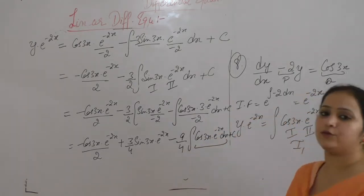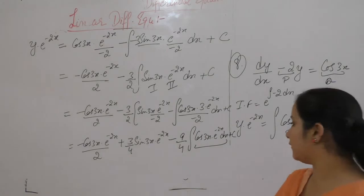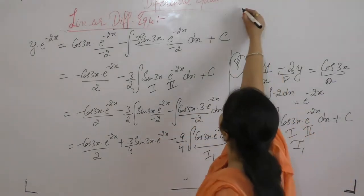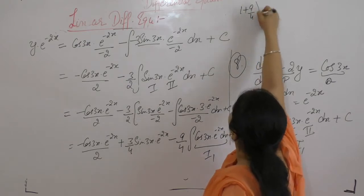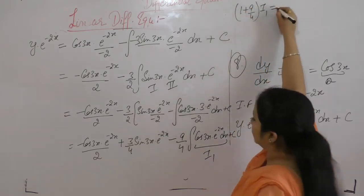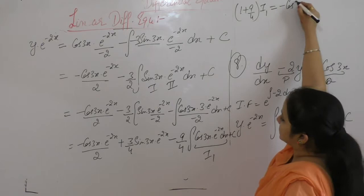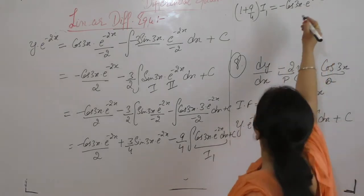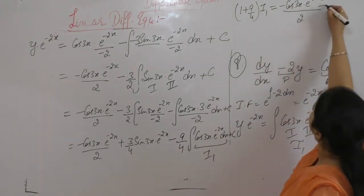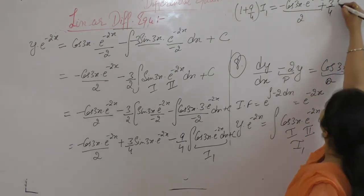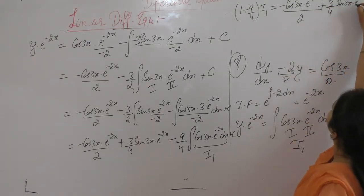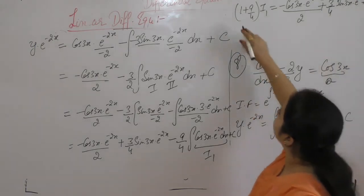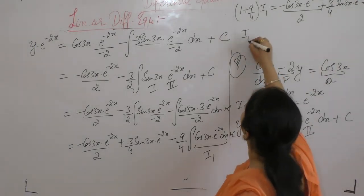This is the same integral which we are solving, so it is I1. When it goes on the other side, it becomes 1 plus 9 by 4 · I1 equals minus cos(3x) · e^(-2x) upon 2 plus 3 by 4 · sin(3x) · e^(-2x) plus c. 4 plus 9 is 13 by 4.